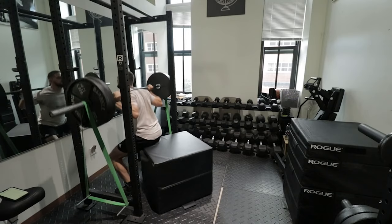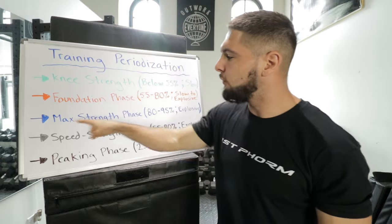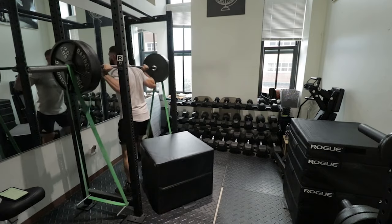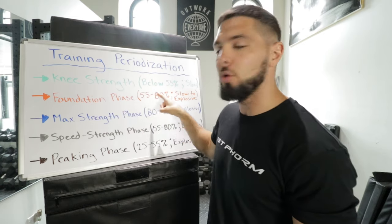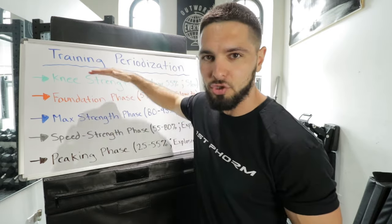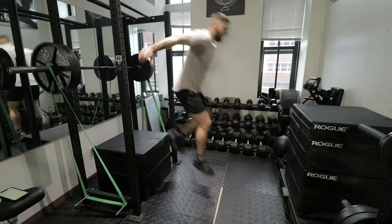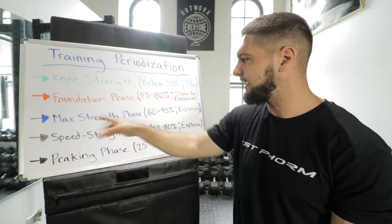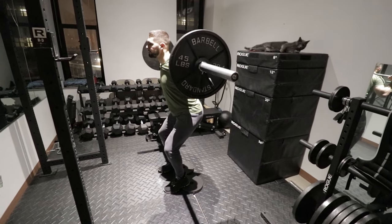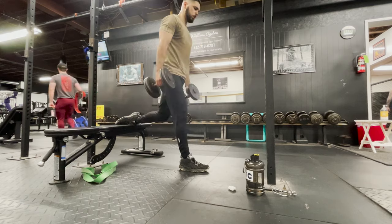Then we move into the max strength phase, where we try to get as strong as possible so that during the speed strength and peaking phases, we can convert that strength into pure speed, explosiveness, and athleticism. This uses 80 to 95% of your one rep max — heavy loads. You shouldn't jump into this phase without strong knees and a completed foundation phase, because you'll likely develop knee pain. This phase is also nine weeks long: three weeks eccentric focus, three weeks isometric, three weeks concentric — all performed explosively.